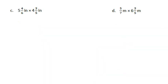On the next problem, I need to find how many sixths are in 5 wholes. 6 times 5 is 30, so there are 30 sixths in 5 wholes, plus 4 more — that gives me 34 sixths. And 5 times 4 is 20 fourths in 4 wholes, plus 3 more gives me 23 fifths.